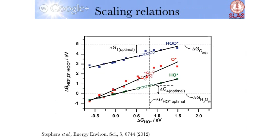What I show here is a calculated free energy of OOH, O, and OH. So the three intermediates involved in that process as a function of the OH binding energy. So what this immediately shows is that they're not uncorrelated.